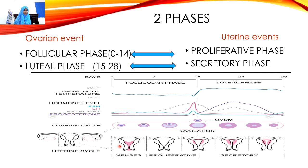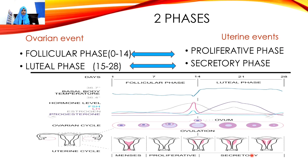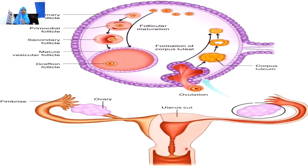Looking at the diagram: starting from the first day of menses, the follicular phase takes place in the ovary and the proliferatory phase takes place in the uterus simultaneously. On day 14, the mature ovum is released from the Graafian follicle — that is ovulation. Then the luteal phase takes place in the ovary and the secretory phase in the uterus.